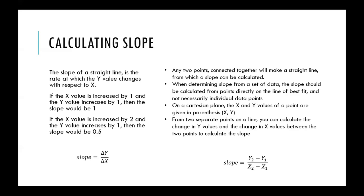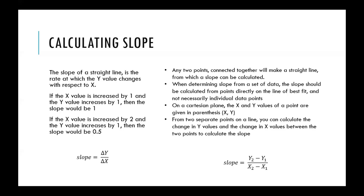Calculating the slope is termed the change in y over the change in x — between two different points, the difference between the y values divided by the difference between the x values. Any two points can be used to make a straight line. The slope can also be referred to as final minus initial: where is your starting data point and where is your ending data point?